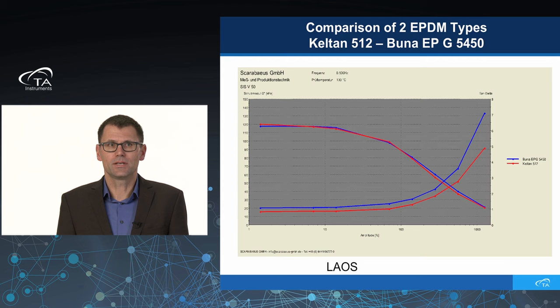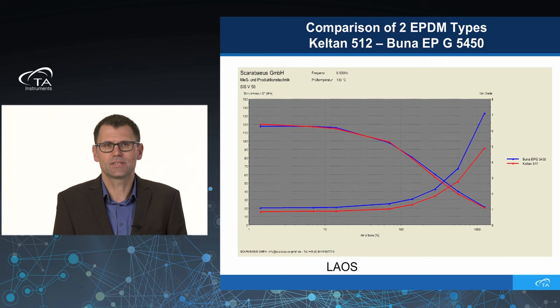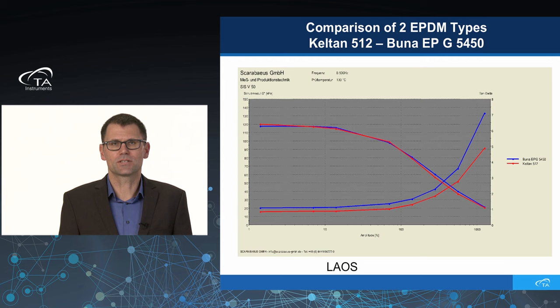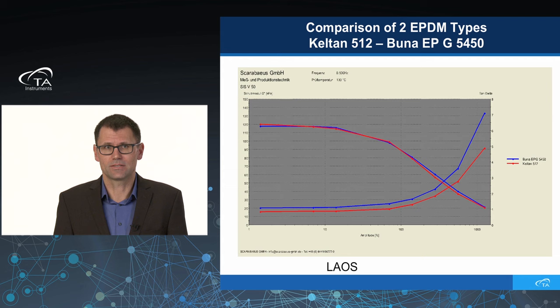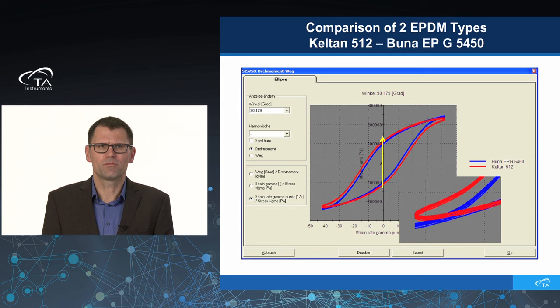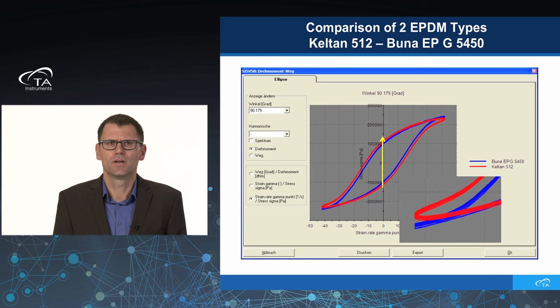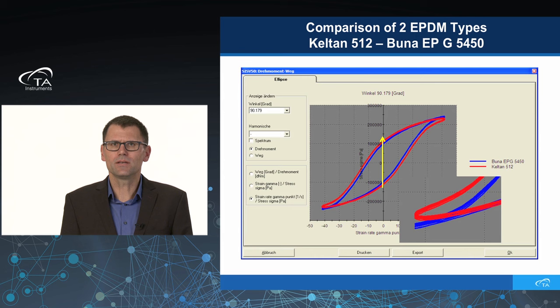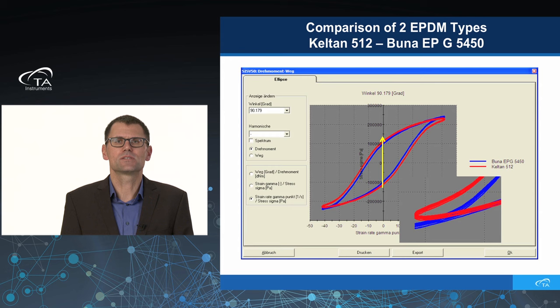Also, in a LAOS test, the tangent delta shows big differences — again with the same Mooney viscosity. The red curve shows no secondary loops, while the blue Buna curve definitely starts to show secondary loops, meaning Keltan is much more branched than Buna, showing differences in long-chain branching — and again, with the same Mooney viscosity.